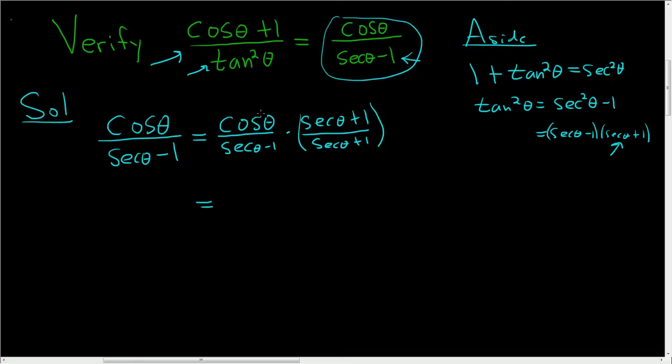So let's distribute in the numerator. We end up with cosine theta secant theta plus cosine theta. And in the denominator, we end up with secant squared theta minus 1, difference of squares. We worked it out on the side, not part of our solution.